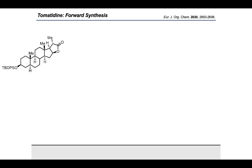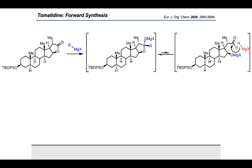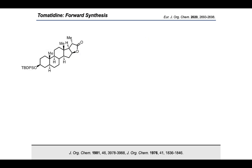We then engaged this lactone in organometallic addition reaction tests using Grignard reagents. Following extensive optimization, no usable amounts of product could be isolated using multiple homemade or commercial Grignard reagents in multiple solvent and temperature settings. What we mainly observed was double addition product. We proposed that the single addition product could reopen to form a ketone, which would engage in a second addition reaction. The use of magnesium organometallic reagents was then discarded, and we turned our attention to lithium-halogen exchange.